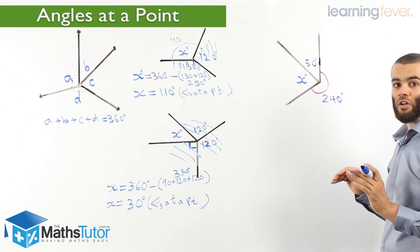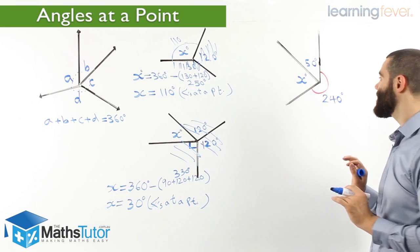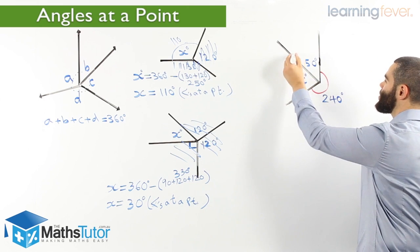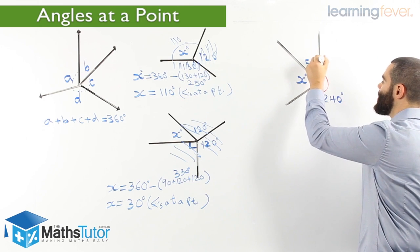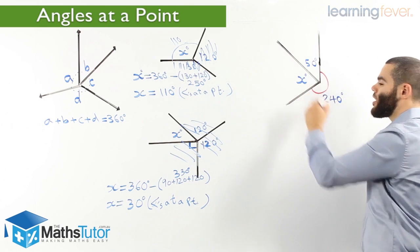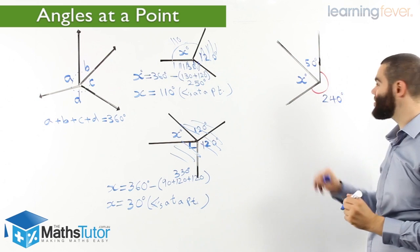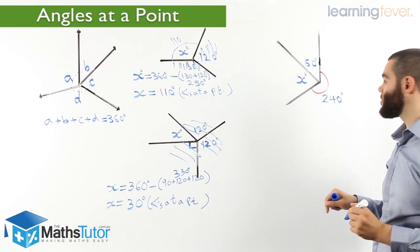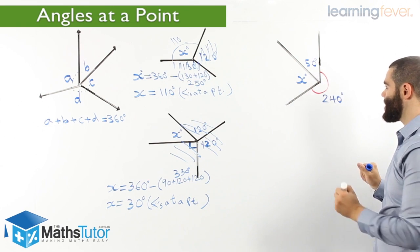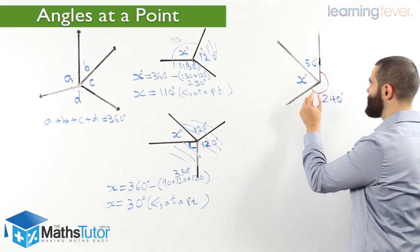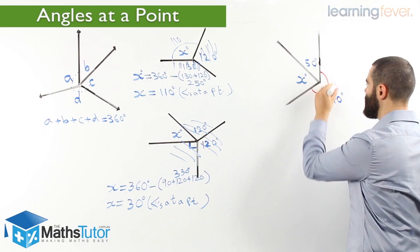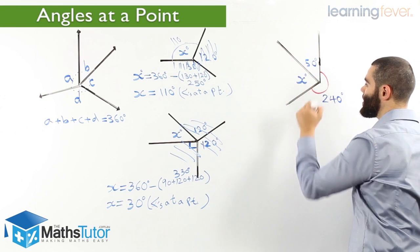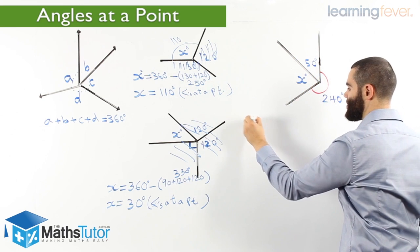Again, we notice we have three angles here: an angle marked with an X, an angle marked with 50, and an angle marked with 240 degrees. This is, as you can see, a reflex angle — a very large angle. We're going to take away the reflex angle and take away the 50, to be left with X.